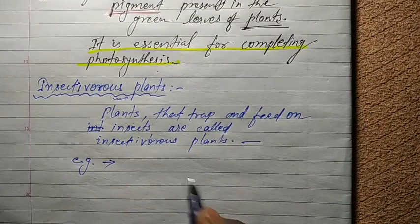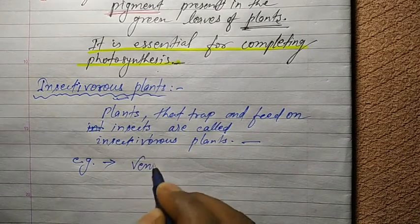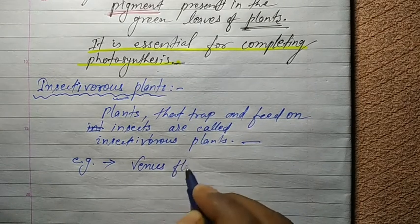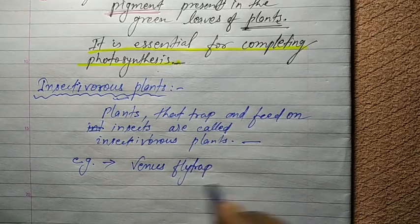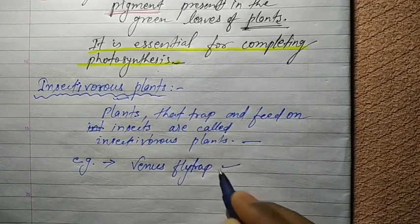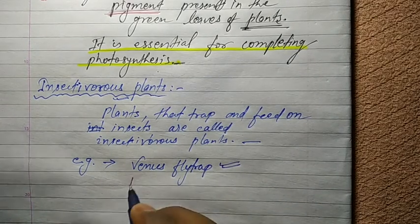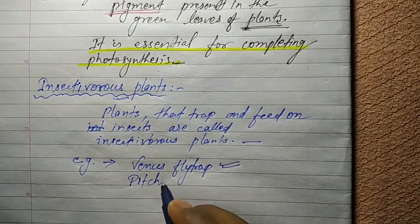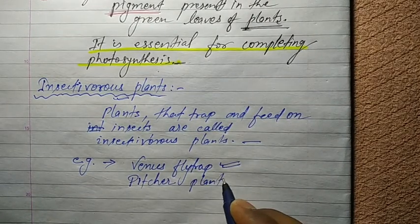For example, Venus flytrap and pitcher plant. Venus flytrap is the first example, and the second one is pitcher plant.